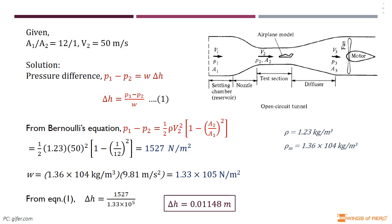From Bernoulli's equation we can find the pressure difference p₁ minus p₂. So write p₁ minus p₂ equals ½ρV₂² times [1 minus (A₂/A₁)²].